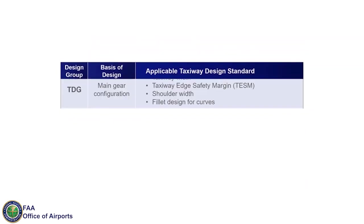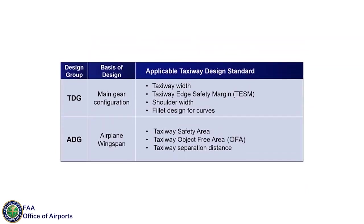Taxiway standards based on TDG include taxiway width, taxiway edge safety margin, or TESM, shoulder width, and fillet design for taxiway curves. Taxiway standards based on ADG include taxiway safety area, object free area, or OFA, and separation distance. In general, taxiway standards increase in size as TDG and ADG categories increase.